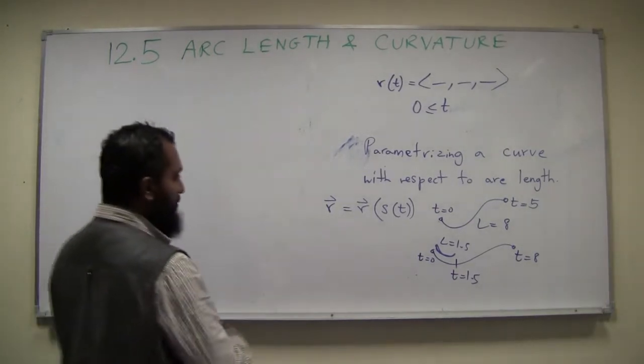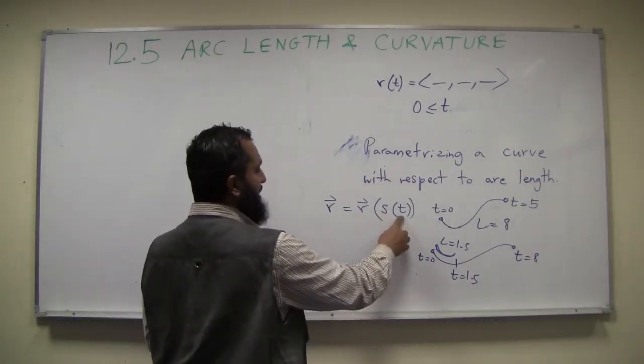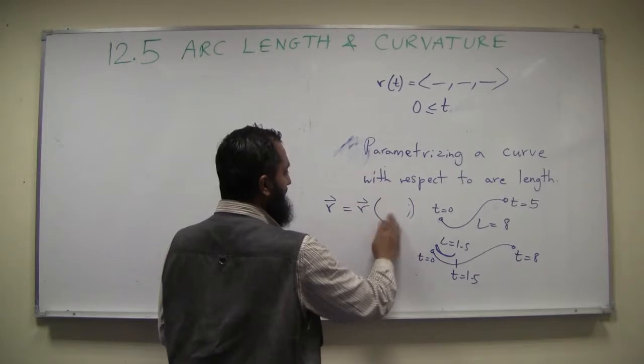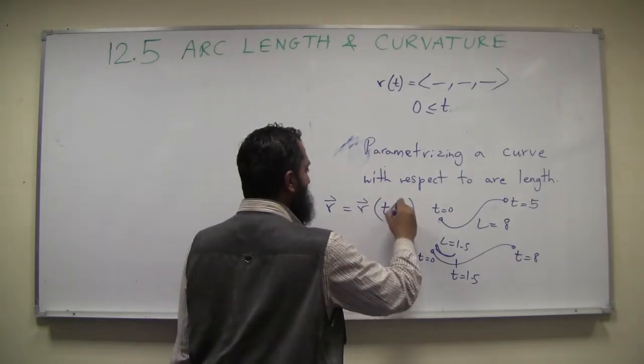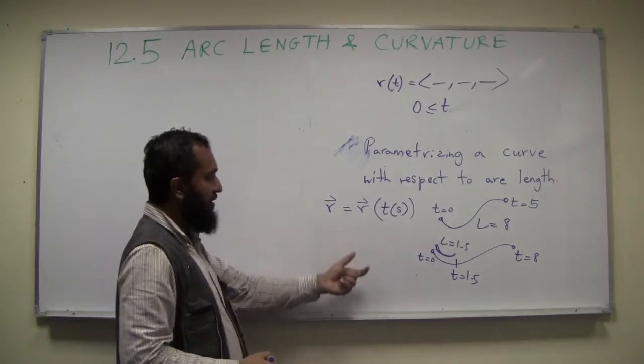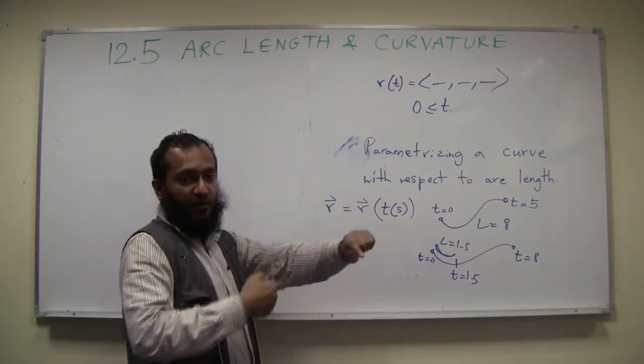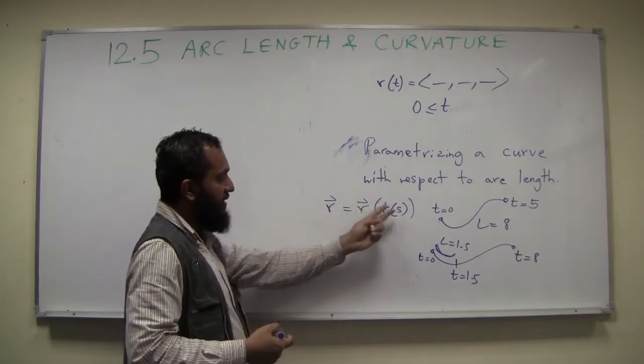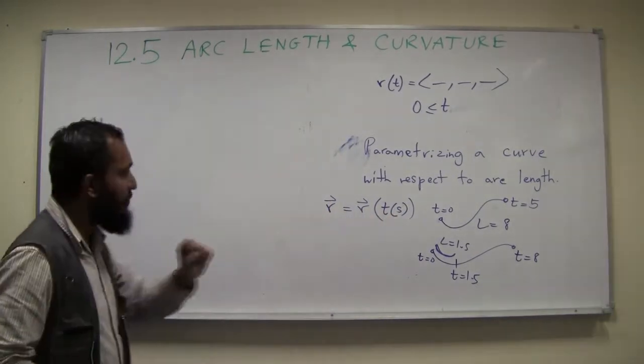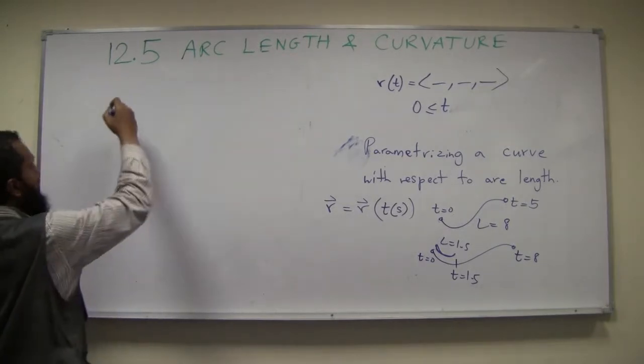Actually, I made a small mistake here, I wrote s of t. What I need to write is, I want to express t in terms of s, right. Where s is a function of t, is the arc length function. But then what I want to do is, I want to extract t out of it in such a way that it tells me what the s is. Because the s is the arc length function, right. It will become clear when we do this example. So, let's do this thing.